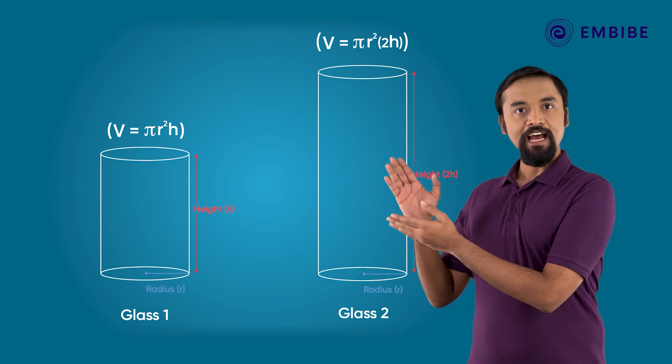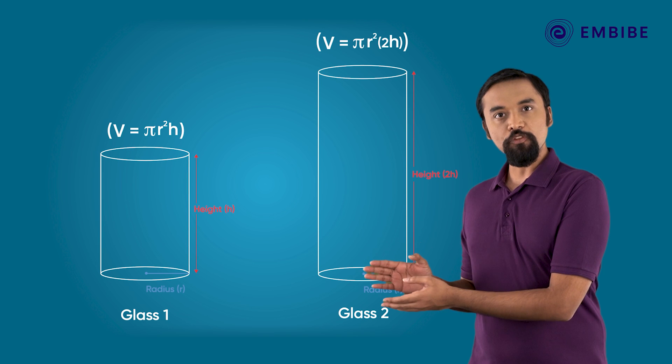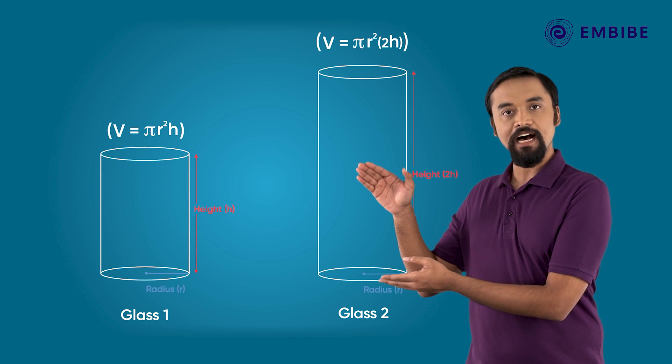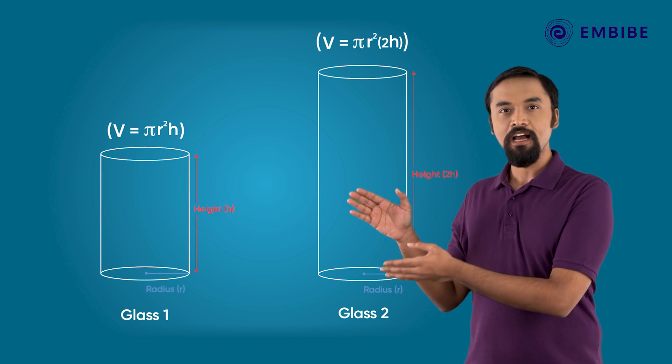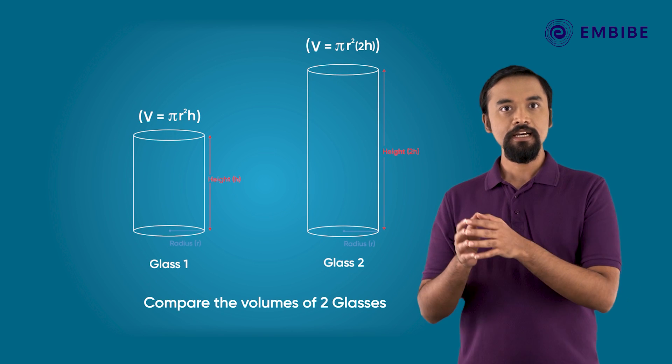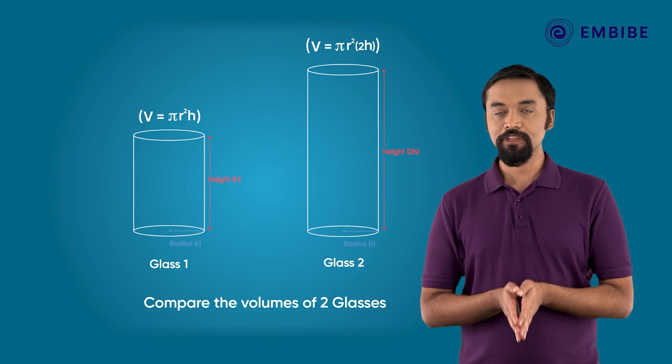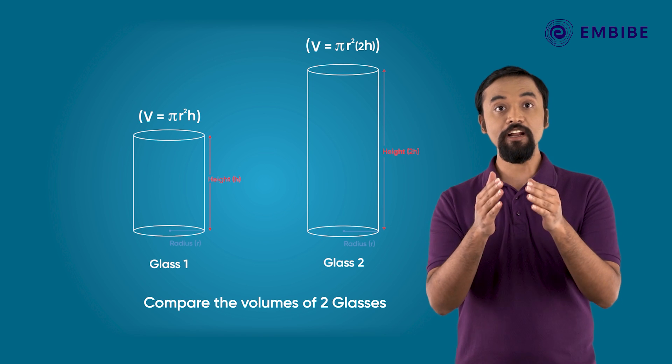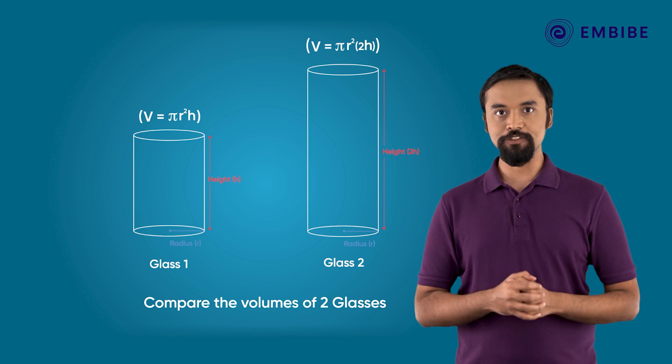If two glasses have the same radius but the first glass has twice the height of the second glass, how many times will the first glass hold more water compared to the second glass? We'll need to compare their volume ratio. Check out this video.